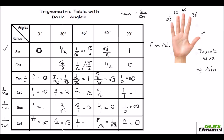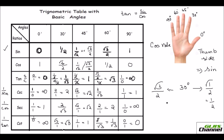For sine and cosine of 30°, leave down the index finger. On the thumb side you have 1 finger, and on the cosine side you have 3 fingers. Find the square root of each count and divide by 2. So sine 30° = √1/2 = 1/2, and cosine 30° = √3/2. You can verify this matches the table.